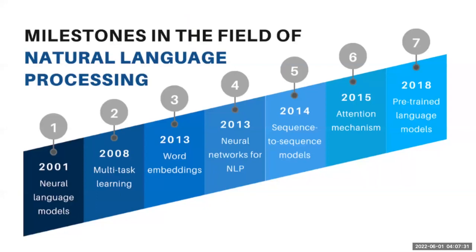The term language model was first coined before 1949. Claude Shannon used the statistical language model term n-grams in his book Mathematical Theory of Communication.